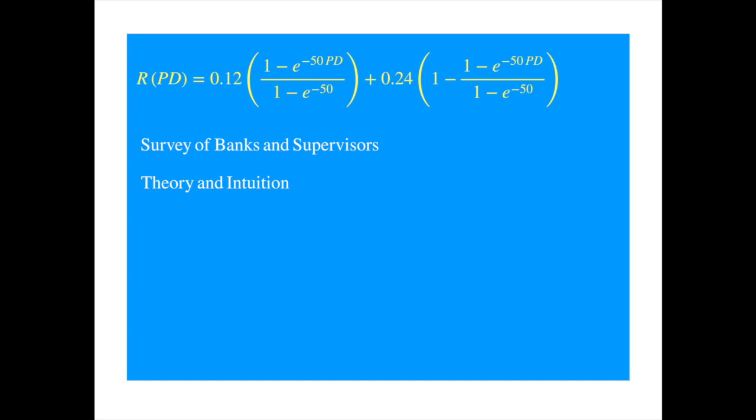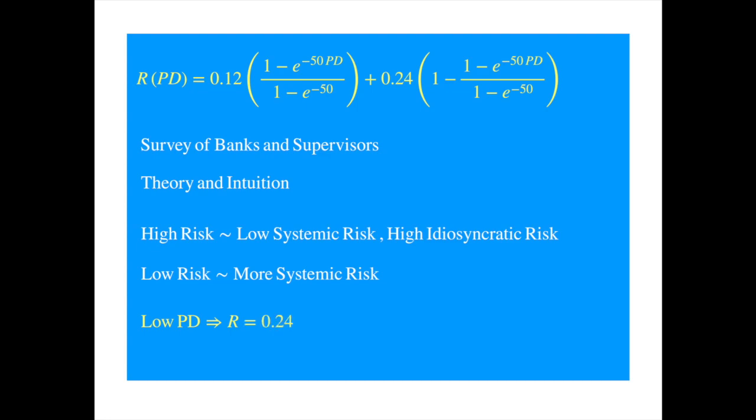To cut a long story short, the conclusion was that high-risk borrowers, these would be the corporates with the higher probabilities of default, are more exposed to idiosyncratic risk and less to systemic risk, whereas low-risk borrowers carry more systemic risk. Through the survey and judgment, it was concluded that the low probability of default customer will have an R of 24%, whereas high probability of default customers will have an R of 12%.